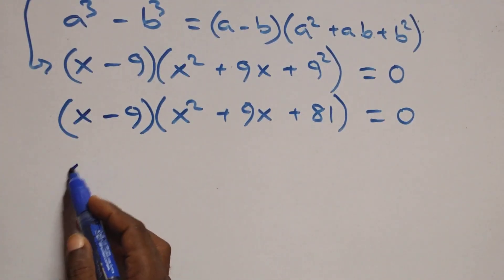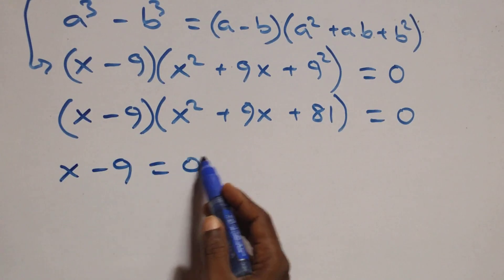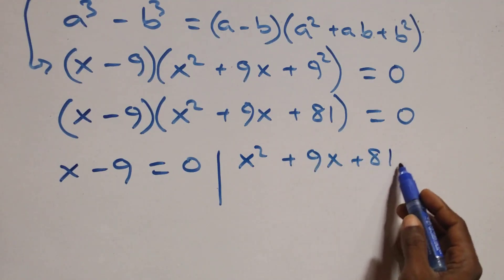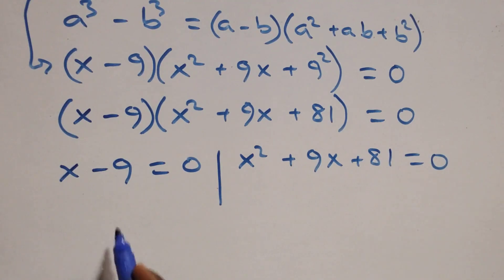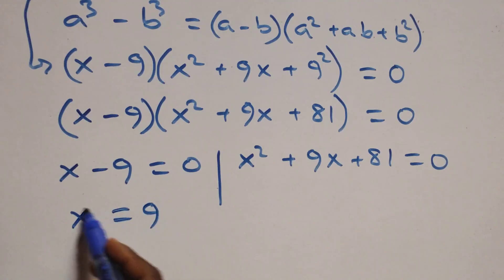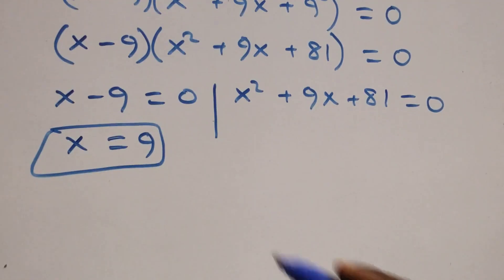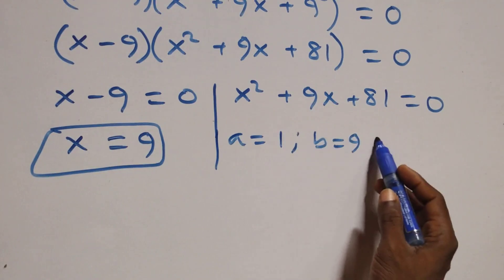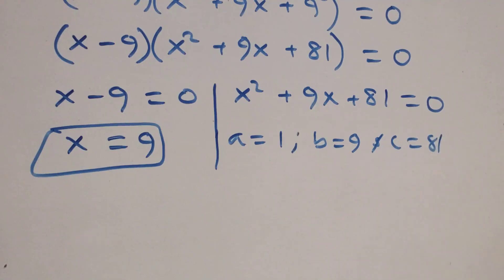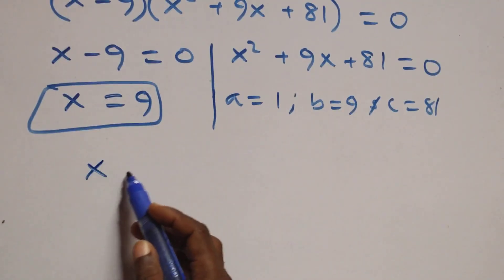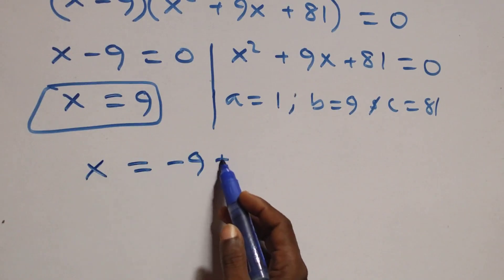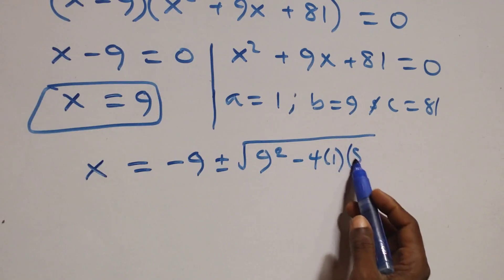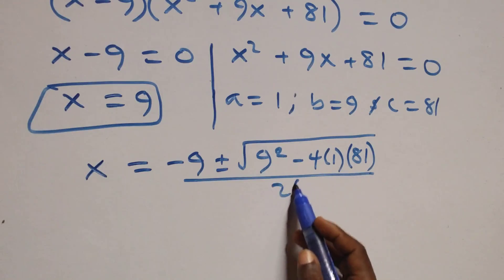We have two possible cases: x − 9 = 0, or x² + 9x + 81 = 0. From x − 9 = 0, we get x = 9, which is the only real solution here. For the quadratic, a = 1, b = 9, c = 81. Applying the quadratic formula: x = (−9 ± √(81 − 4·1·81)) / (2·1).